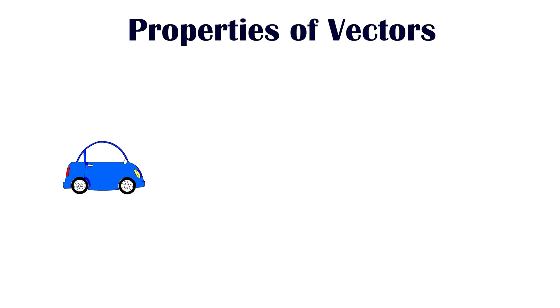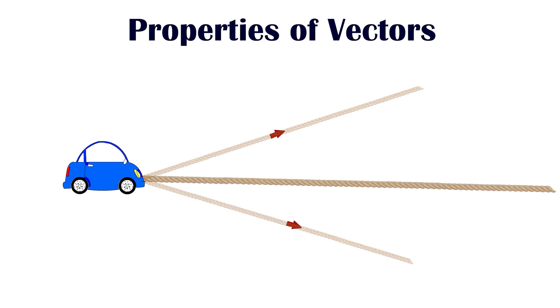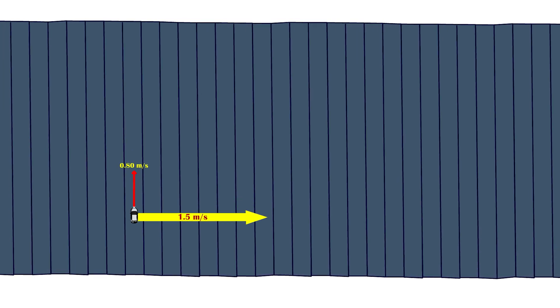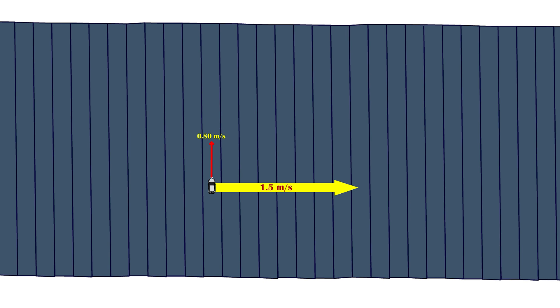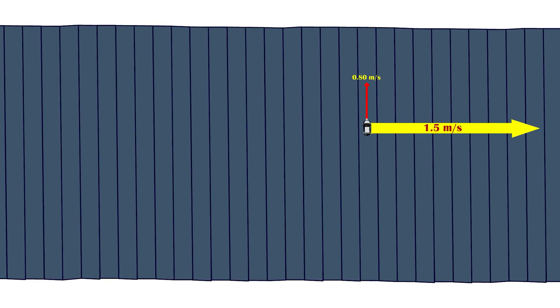Consider a case in which two or more vectors act at the same point. When this occurs, it is possible to find a resultant vector that has the same net effect as the combination of the individual vectors. Imagine looking down from the second level of an airport at a toy car moving at 0.80 meters per second across a walkway that moves at 1.5 meters per second. How can you determine what the car's resultant velocity will look like from your viewpoint? Vectors can be moved parallel to themselves in a diagram.